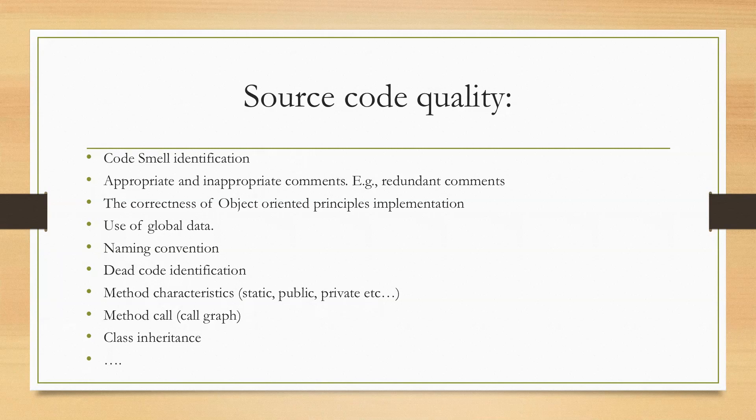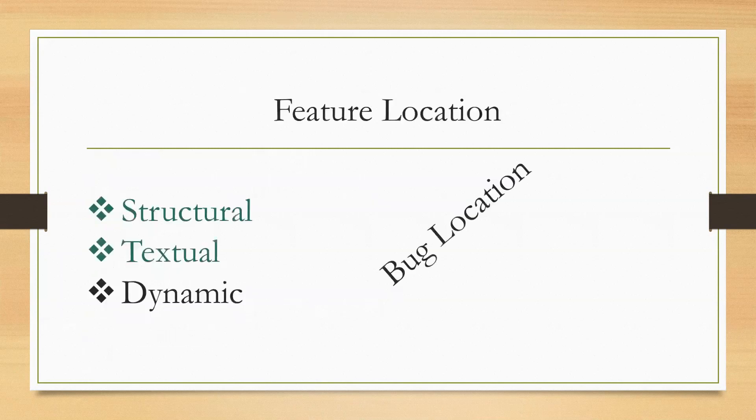The second phase focuses on feature location techniques and their usages in locating particular functionalities or features or the identification of an existing bug in the software system. From existing three categories of feature location techniques, we are focusing on only structural and textual based feature location techniques in this module.